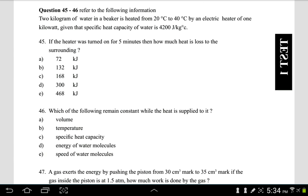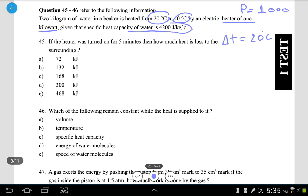For number 45 and 46, 2 kilograms of water in a beaker is heated from 20 to 40 degrees Celsius. So we can list what we know first. Delta T equals 20 degrees Celsius. An electric heater of 1 kilowatt was used, so we know the power P equals 1,000. And the specific heat capacity of water is 4,200 joules per kilogram. This is C.